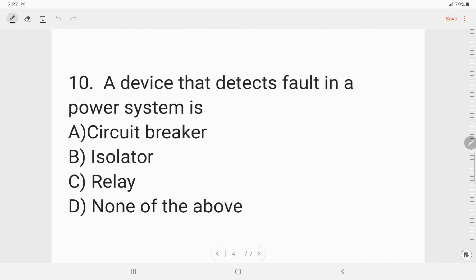Next, a device that detects fault in a power system is circuit breaker, isolator, relay. These are the options given. Now, we know that a circuit breaker's work is to break or make a circuit automatically or manually whereas isolators break a circuit manually.